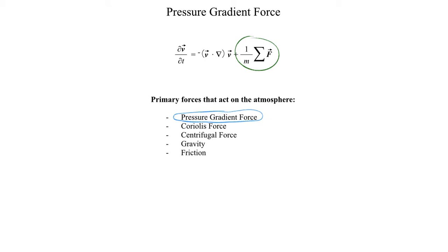Let's go ahead and revisit Newton's second law for a quick moment. The next several lectures are going to be devoted towards resolving this particular term — figuring out all the different forces that act on fluids in the atmosphere. The first one we're going to look at is the pressure gradient force, but there are others such as the Coriolis force and the centrifugal force, which are a consequence of having a rotating spherical planet. We'll also need to worry about gravity and friction, but for this immediate lecture we're only going to focus on the pressure gradient force.